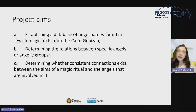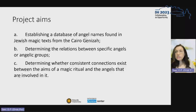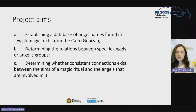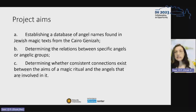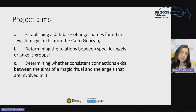First of all, we wanted to establish a database of angel names found in those Jewish magic texts from the Cairo Geniza. Secondly, we plan to determine the relation between specific angels or angelic groups — for instance, do we always find Raphael together with Gabriel and Michael, or are they more usually found separately? Lastly, we plan to determine whether consistent connections can be determined to exist between the aims of a specific ritual and the angels that are adjured to achieve a specific aim, such as healing a person, assisting a woman in delivering a baby, bringing wealth, or finding treasure.